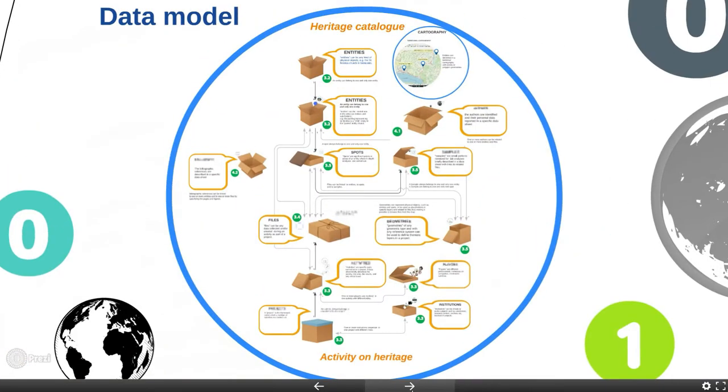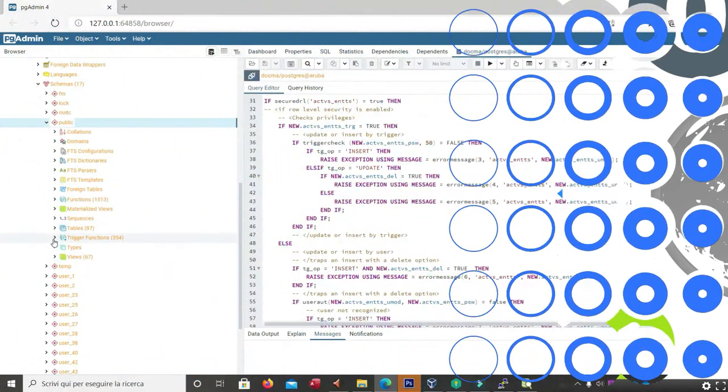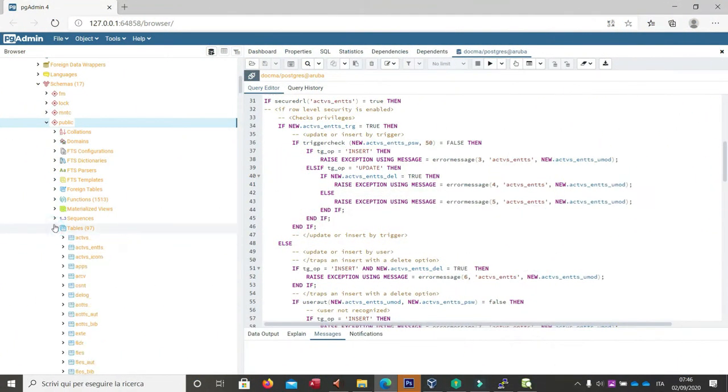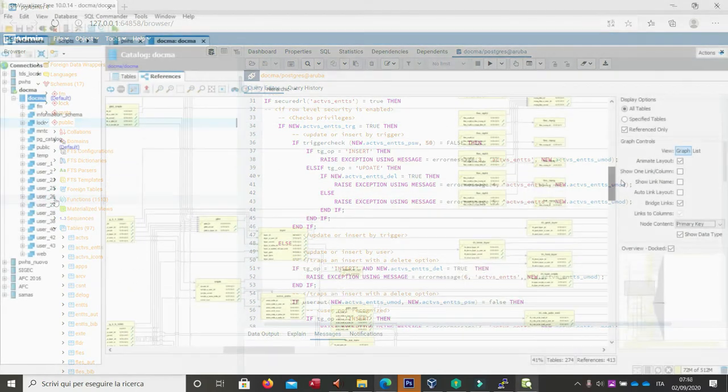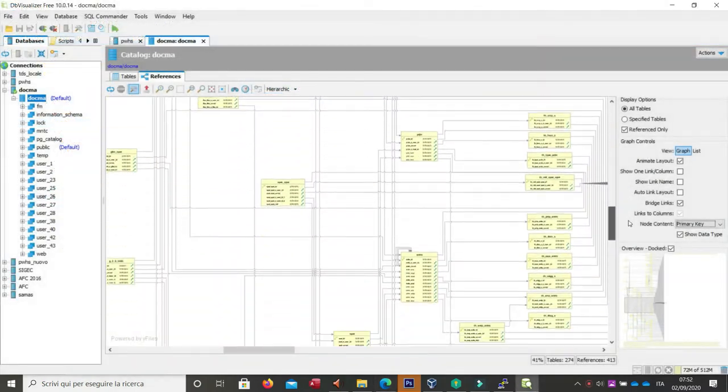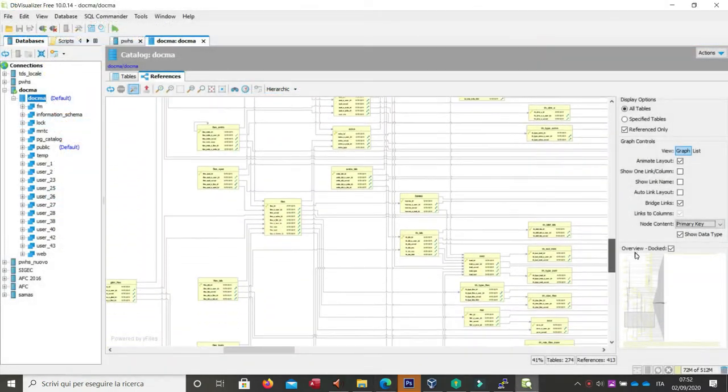Many people, when they hear of databases, think of a list of files. The relational model we have developed is actually quite complex. The public database scheme alone contains more than 90 tables, 2500 fields, and 450 constraints.